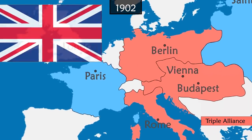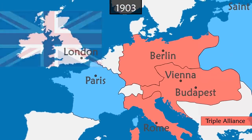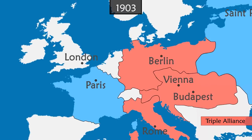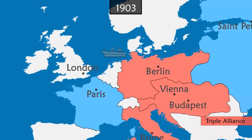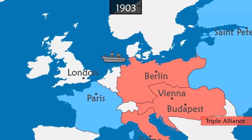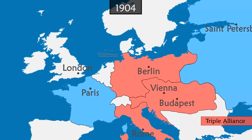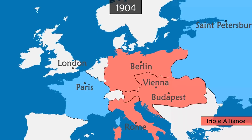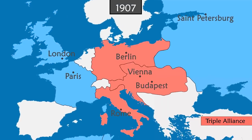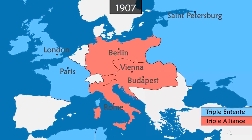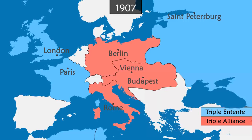The British Empire fears the rise of the German army, more specifically of its navy. Britain comes out of isolation, moves closer to France and then to Russia. Together, they form the Triple Entente.